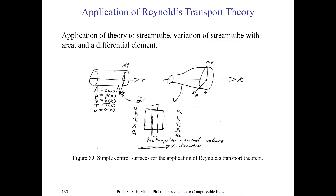We take a slice in the YZ plane and place a small differential control volume through the stream tube with thickness dx. This is still the X direction, going from state 1 to state 2. State 1 is U₁, P₁, T₁, ρ₁, E₁ where E is energy. State 2 is U₂, P₂, T₂, ρ₂, E₂. We look to apply Reynolds transport theory across this differential volume with perhaps changing area.